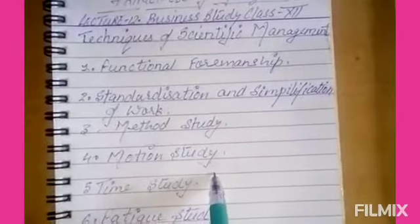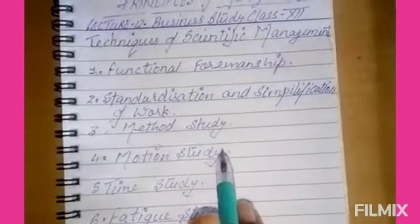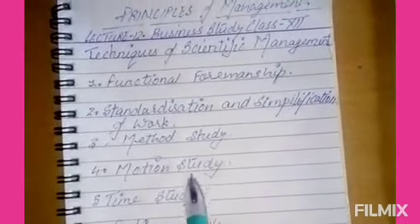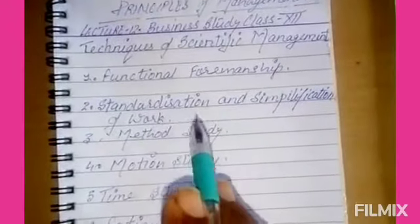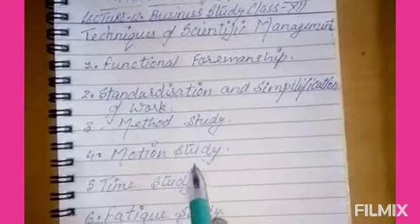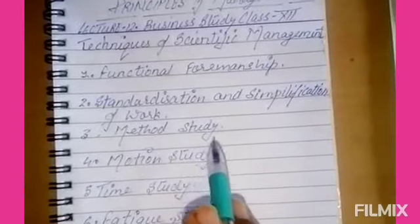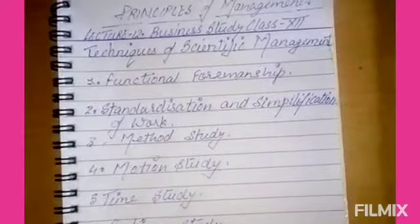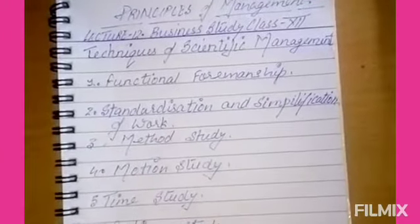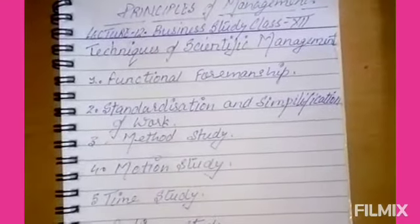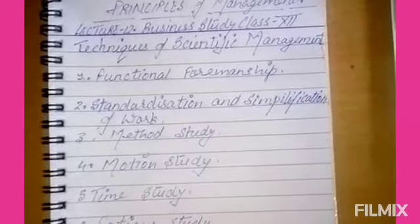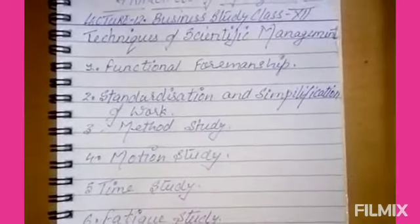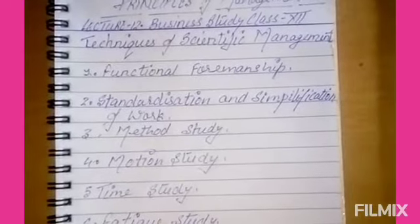Under functional foremanship, the factory manager oversees a planning in charge and a production in charge. Under the planning in charge, there are four specialists: the instruction card clerk, the route clerk, the time and cost clerk, and the disciplinarian clerk.